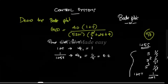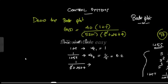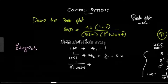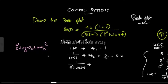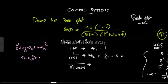The third term is 1/(s² + 2s + 4). The corner frequency is found from the general form s² + 2ζωₙs + ωₙ². In this case, ωₙ² = 4, so ωc3 = ωₙ = 2.